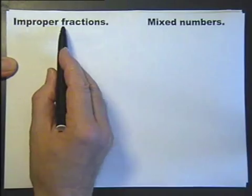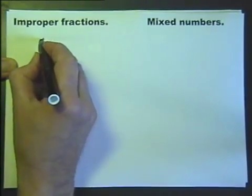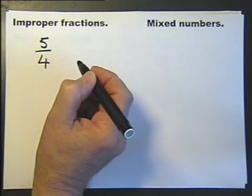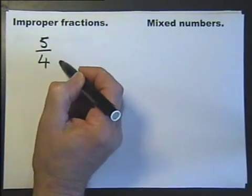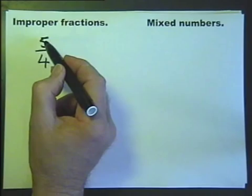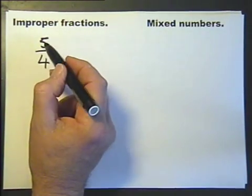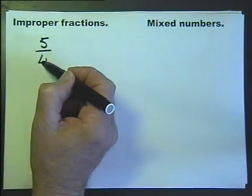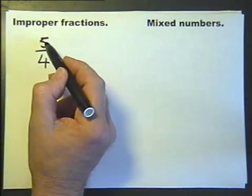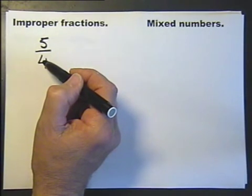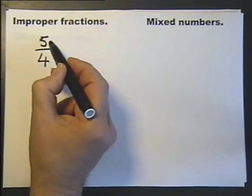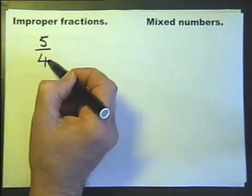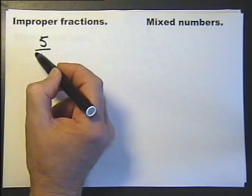So let's start with improper fractions. This is an improper fraction. Sometimes we call them top-heavy fractions because the top number is bigger than the bottom number, but the proper term is improper fractions. Talking about proper ways of saying it, I shouldn't say top number bigger than the bottom number, should I? I should say numerator bigger than denominator. But whichever way I say it, that is an improper fraction.